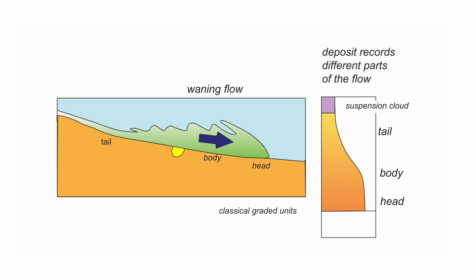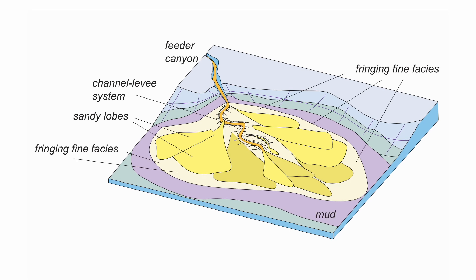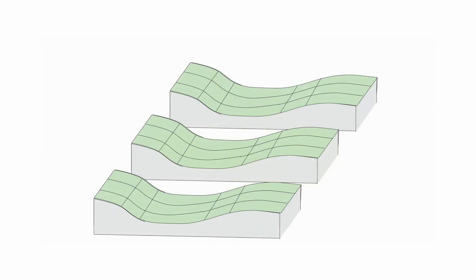This behaviour is expected only really where submarine fans can build out unimpeded across the seabed. But that isn't the situation for the Annot. Like almost all turbidite successions exposed and preserved in the geological record, the causative flows couldn't just spread out in an uninhibited fashion, they were confined along structures that had deformed the seabed.